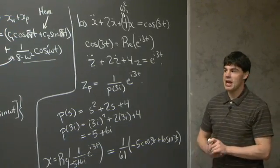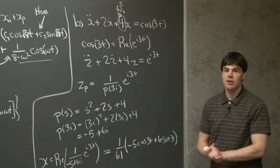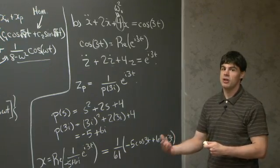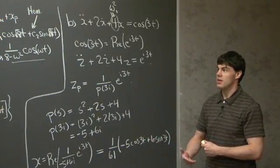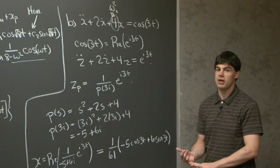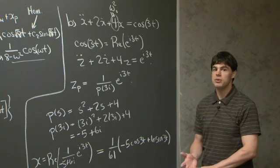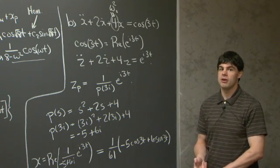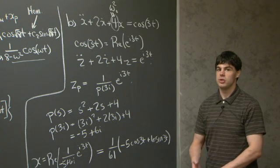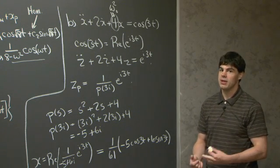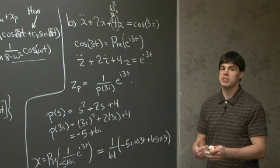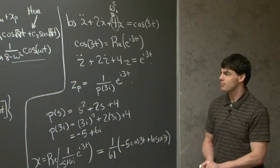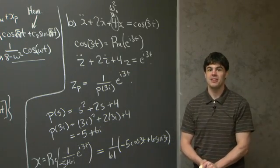To recap: we've looked at forced oscillators and computed their solutions using the ERF. A common approach when we have an oscillating input is to convert the oscillating term into a complex exponential, compute a particular solution using the ERF, then take the real part to recover a real solution. In some cases we also add the homogeneous solution to obtain the full general solution.